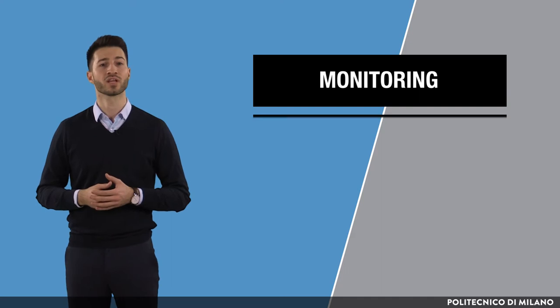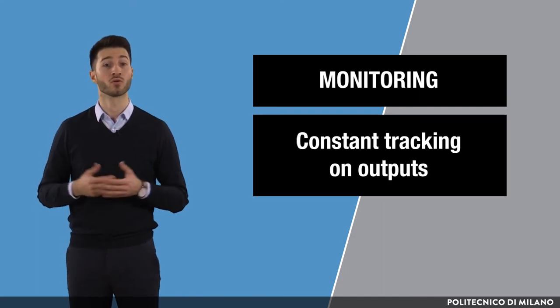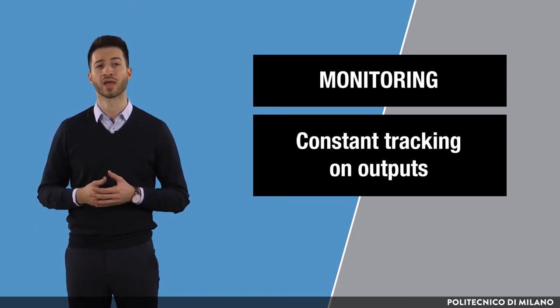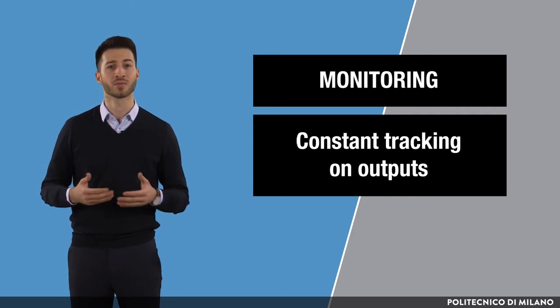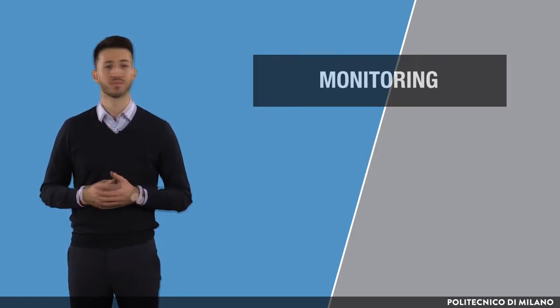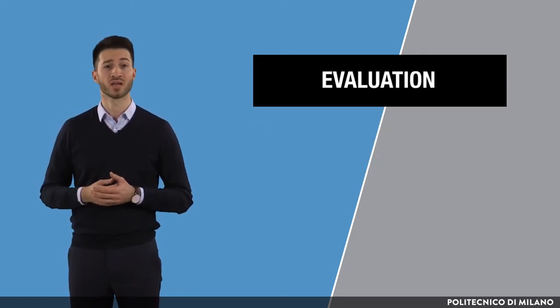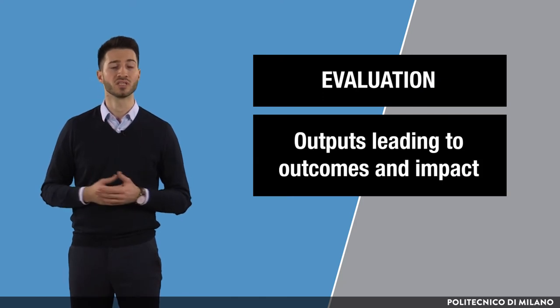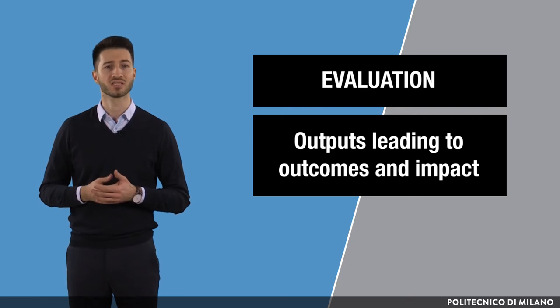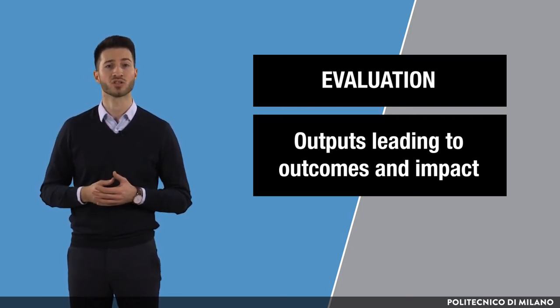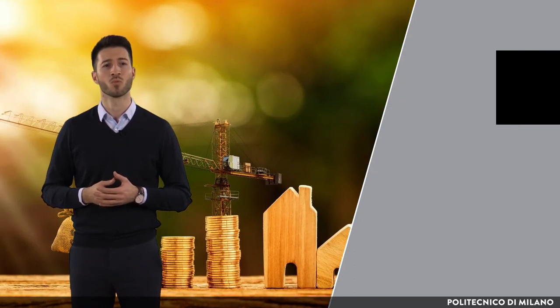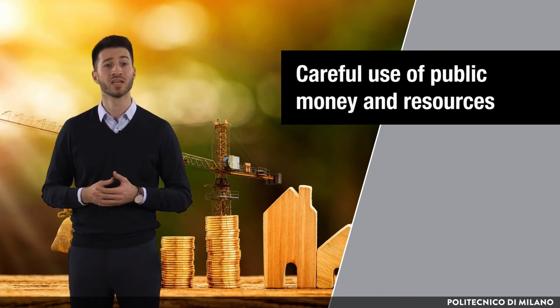First, monitoring enables constant tracking of whether we are going in the right direction to achieve the planned outputs, so we can react timely if we are not doing so. Second, evaluation can tell whether these outputs are leading to the anticipated outcomes and eventually creating the desired impact, which facilitates factual and objective reflection about the policy and allows potential adjustments for the future. By that, monitoring and evaluation tools can facilitate more careful utilization of public money and resources.